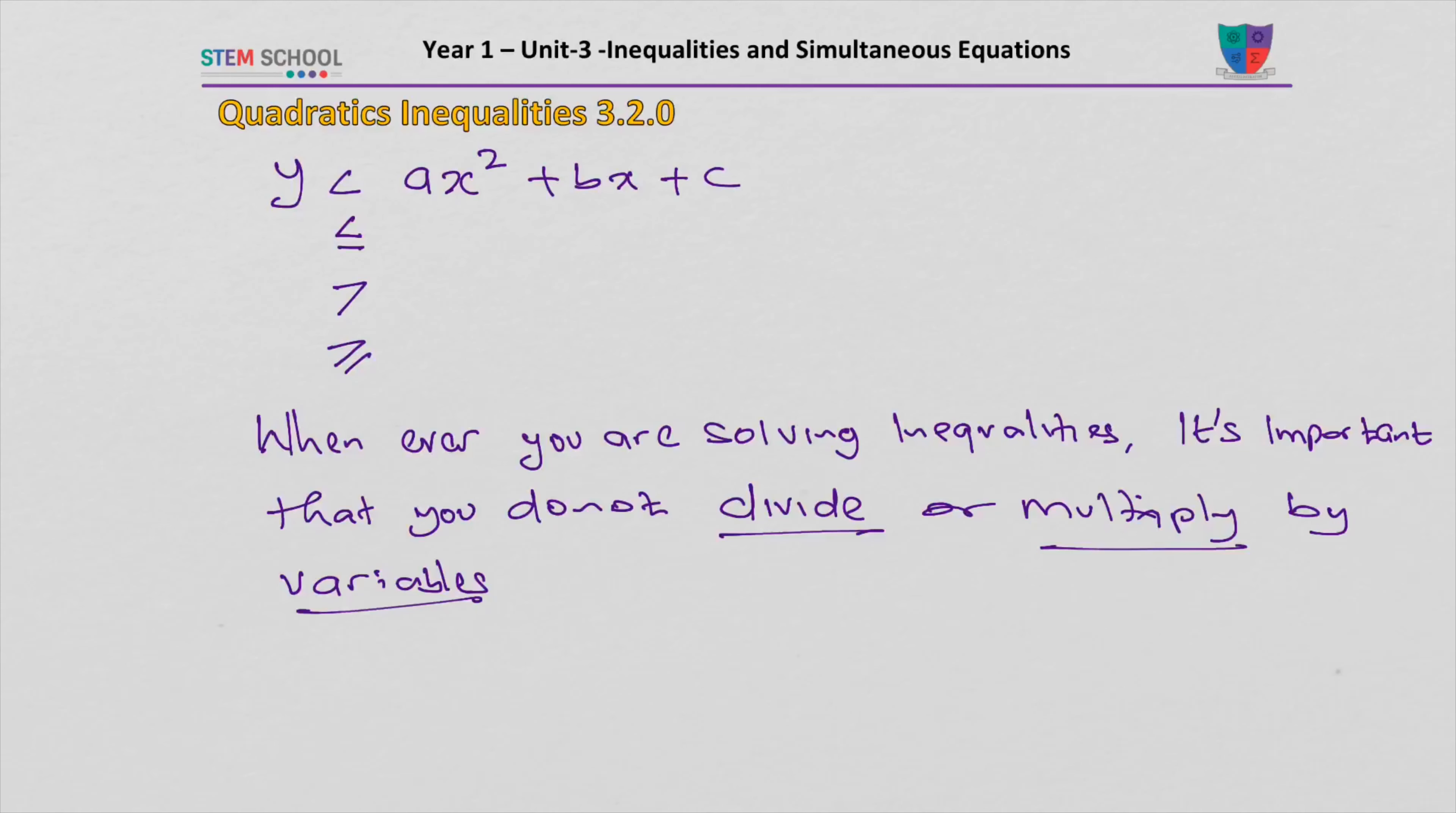So that's why we do not divide or multiply by a variable. A variable, you know, X or Y, a placeholder for a number.